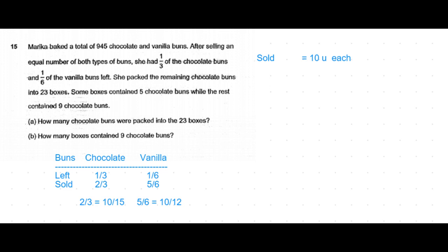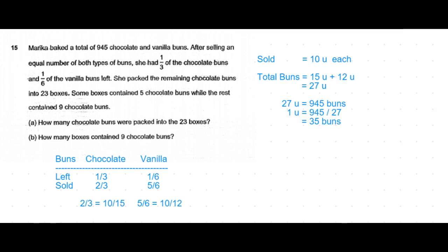So the total number of buns is 15 units for chocolate buns and 12 units for vanilla buns, so a total of 27 units. We now know the total 27 units is equal to 945 buns, which means one unit is 945 over 27, which is 35 buns.